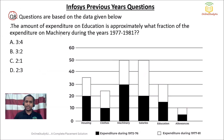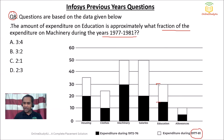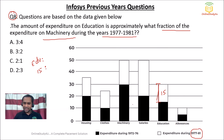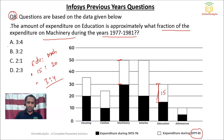Question number 8: the expenditure on education is approximately what fraction of the expenditure on machinery during 1977 to 1981? Education expenditure: the bar goes from 15 to 30, so that is 15 crores. Machinery expenditure: the bar goes from 30 to 50, so that is 20 crores. Therefore education as a fraction of machinery is 15 over 20, which simplifies to 3/4. Option A is the correct answer for question number 8.